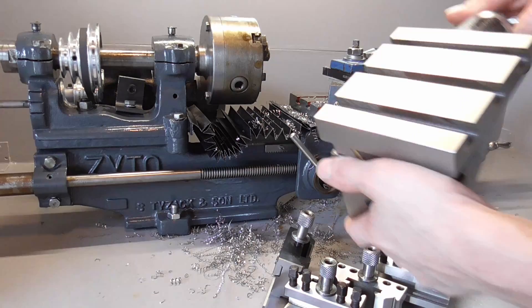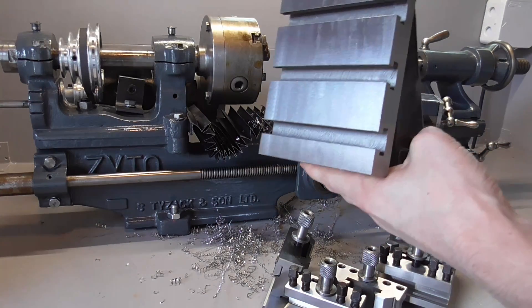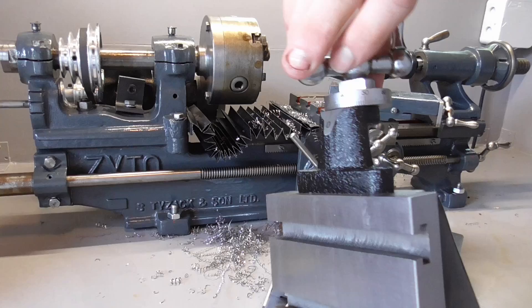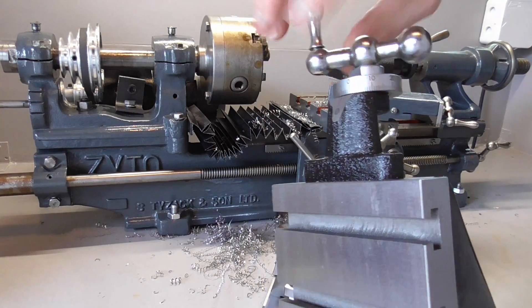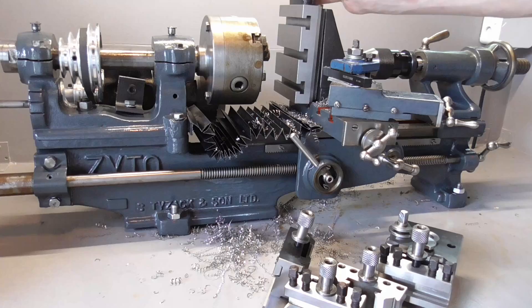I also got a vertical milling support that will enable me to do some milling with the lathe. I also need to adapt it to the cross slide, but I will save that for a later video, as I need to figure out some stuff first.